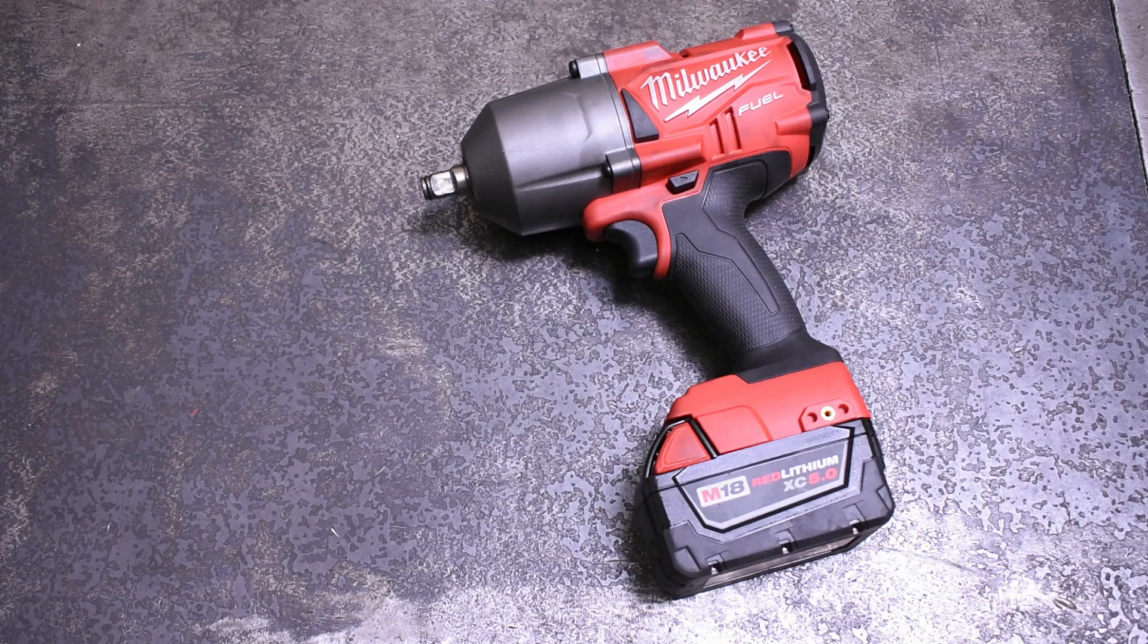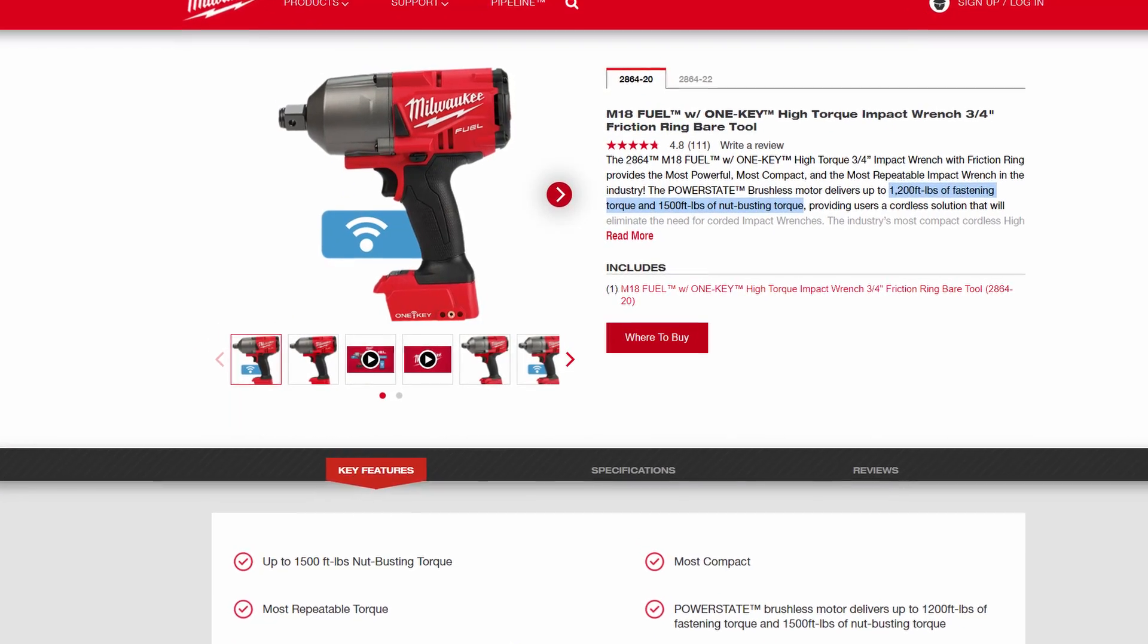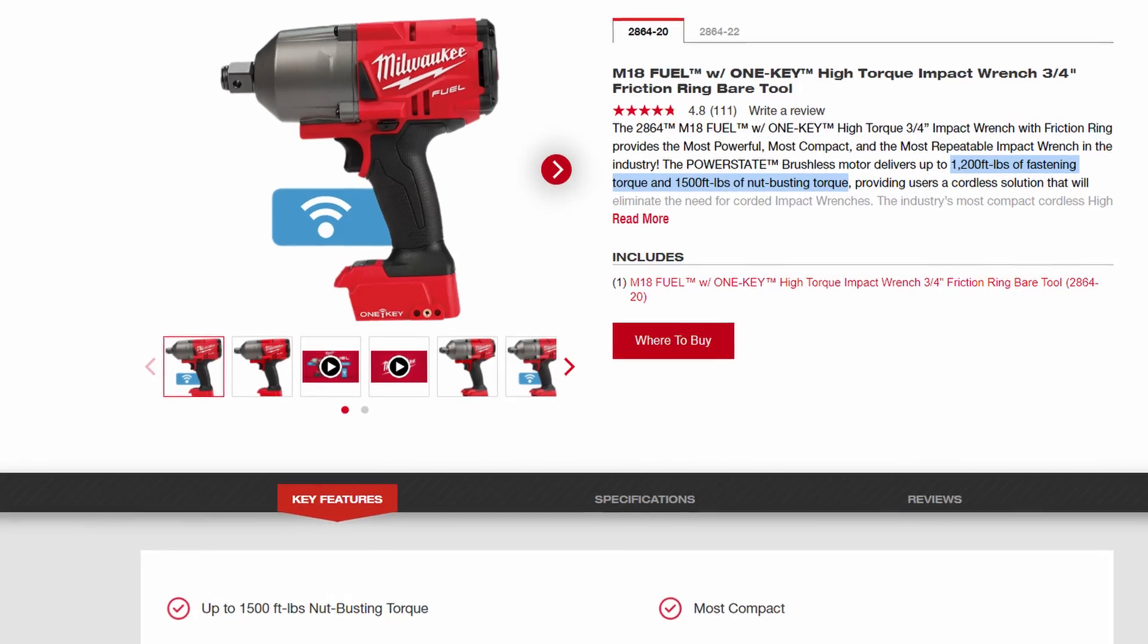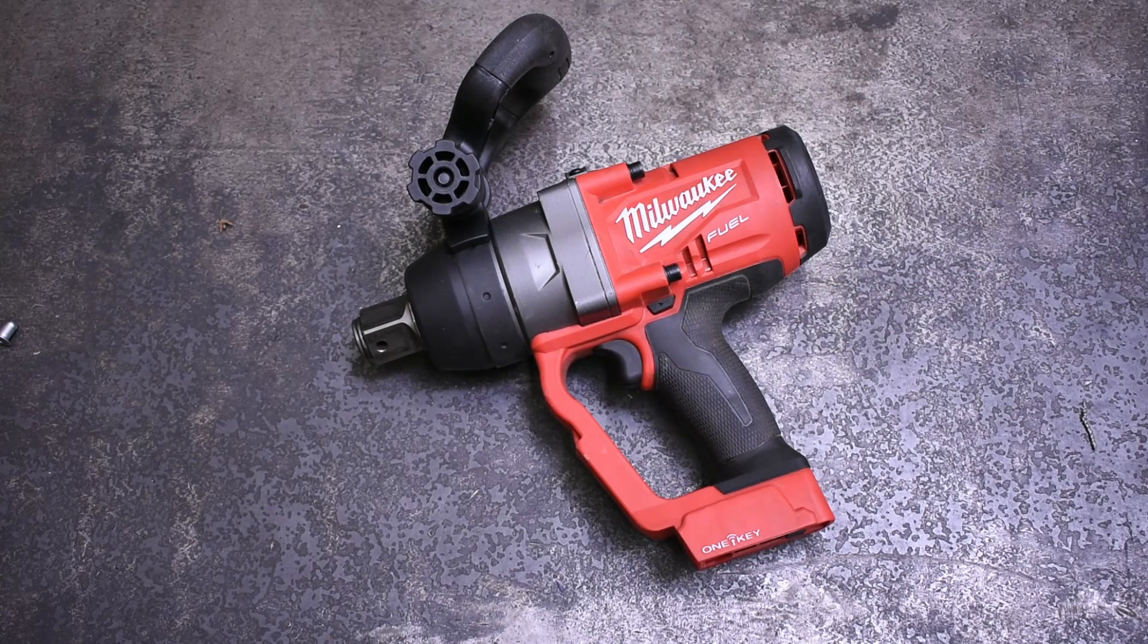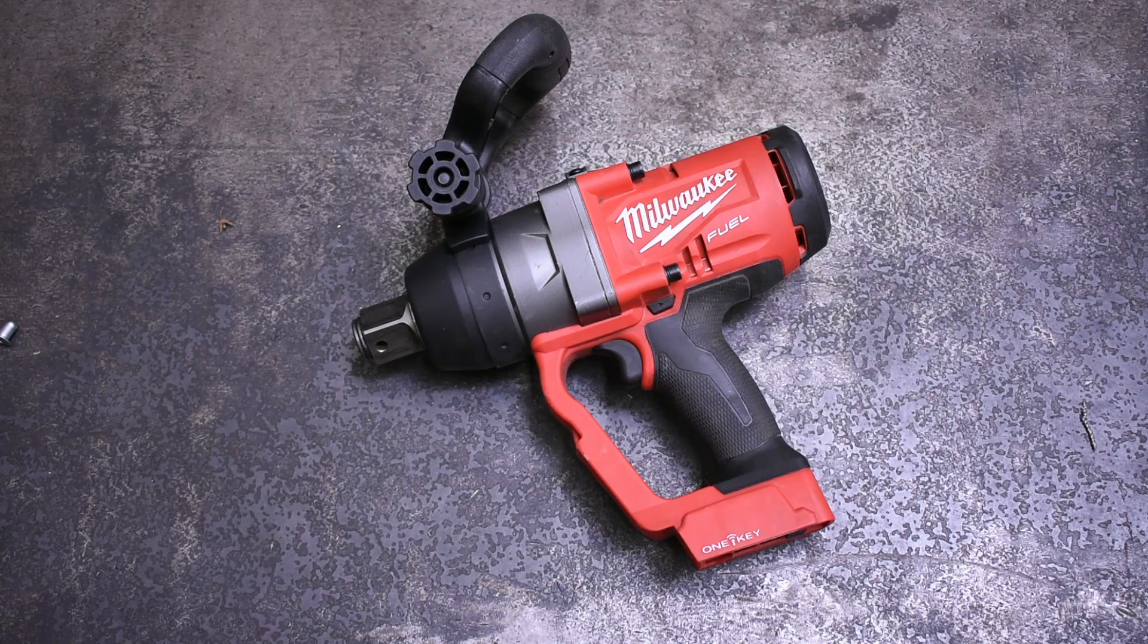The pistol style one-inch M18 will have you dialing 2867-20 into your phone real quick. It advertises 1,800 foot-pounds nut busting and 1,500 foot-pounds fastening.